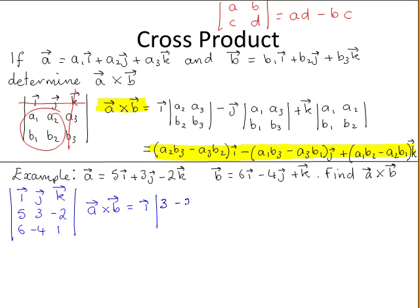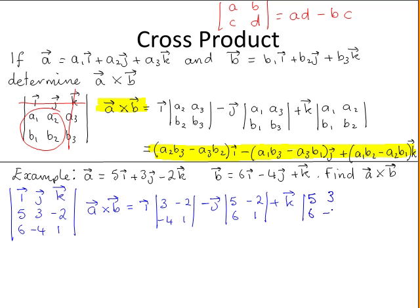That submatrix for i is: 3, minus 2, minus 4, 1. Minus j times the determinant — ignoring the row and column that j is in — leaving us with 5, minus 2, 6, 1. Plus k times the determinant — ignoring the row and column that k is in — leaving us with 5, 3, 6, minus 4.